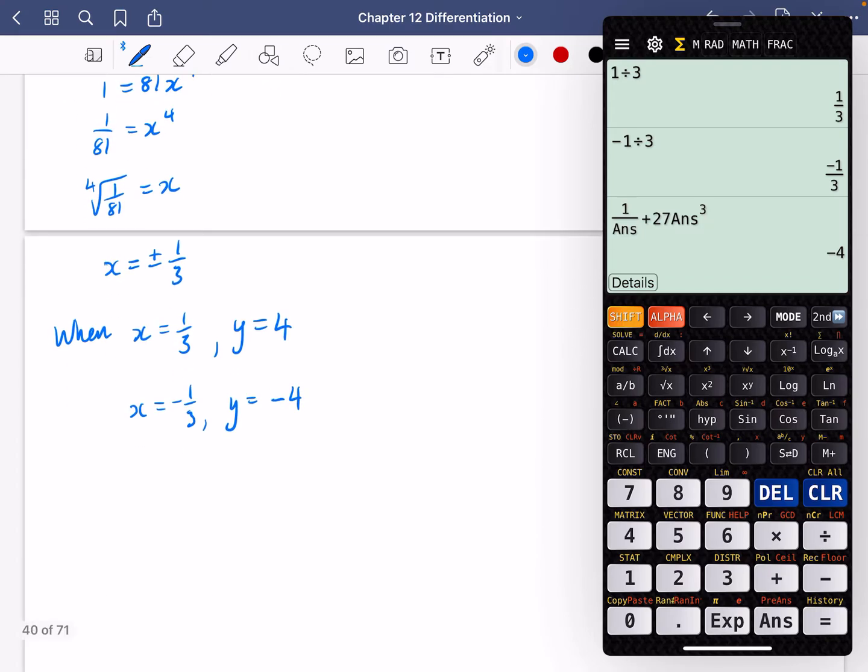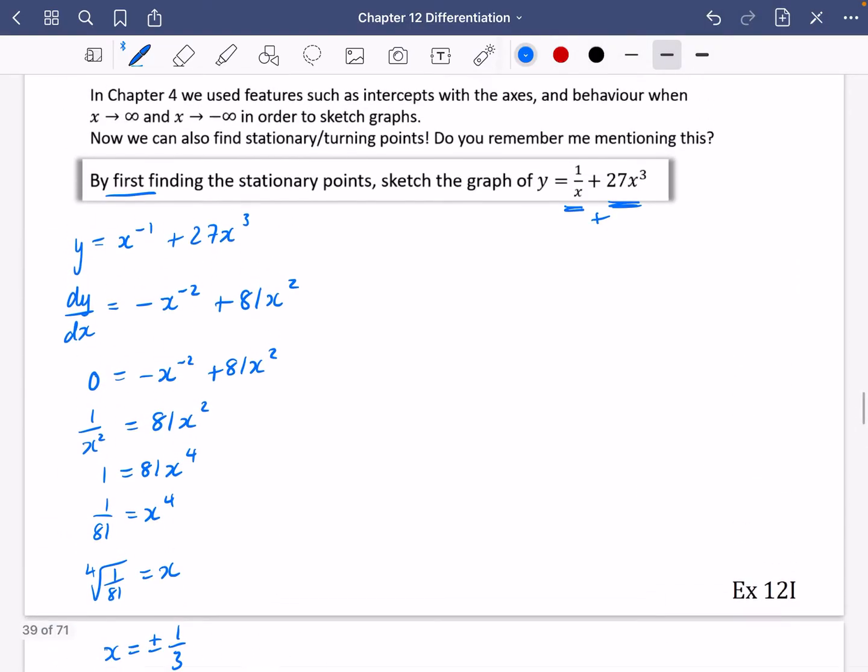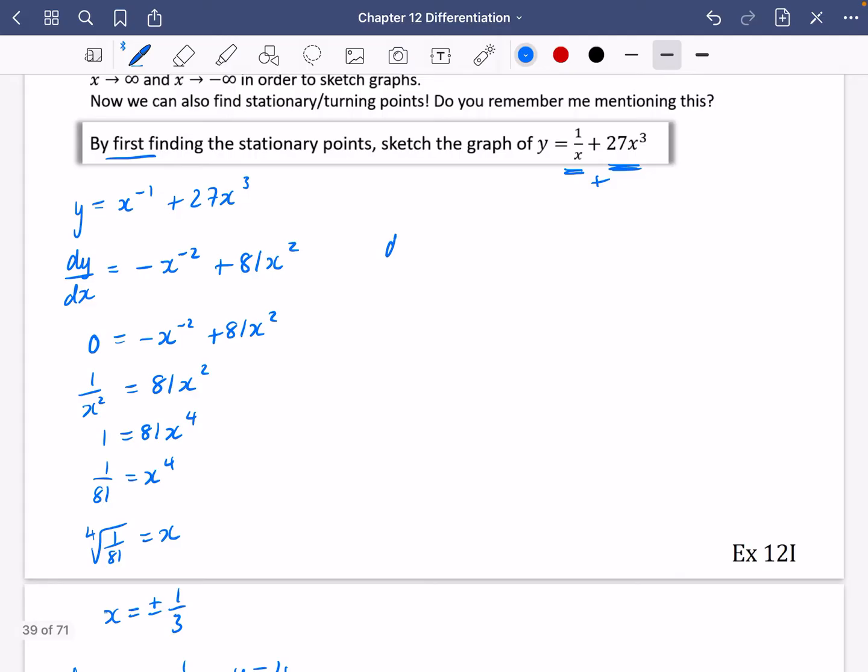So we've got these two stationary points. Now we've got a third, four, and we've got minus a third, minus four. So these are our two stationary points. I think what I'm going to try and do is find out the nature of these stationary points.